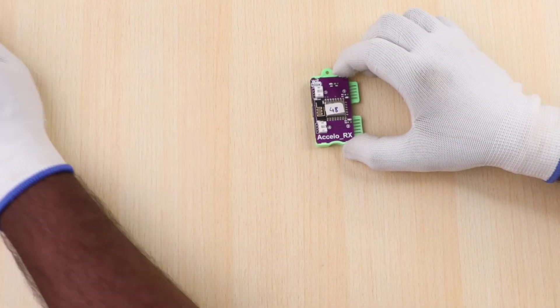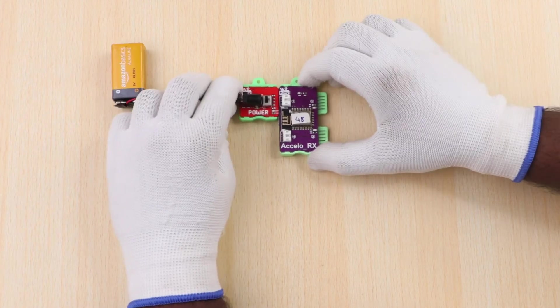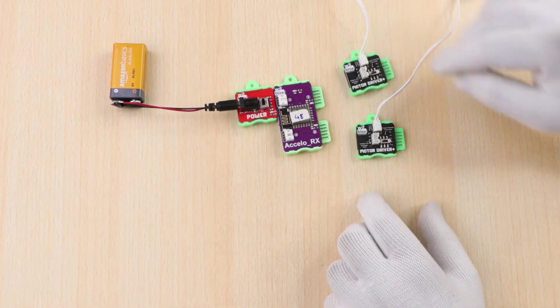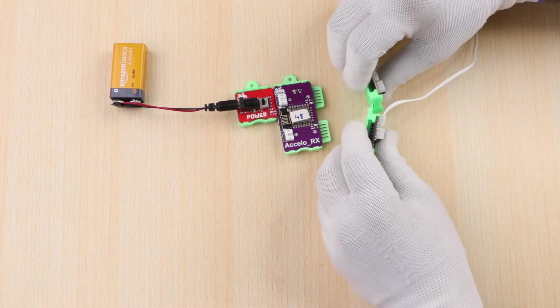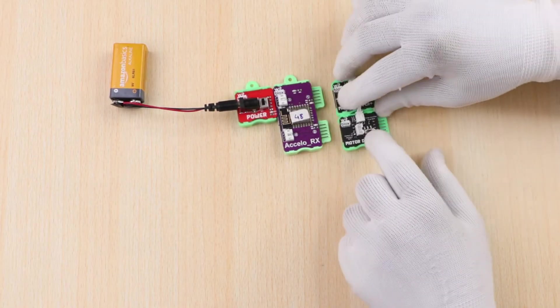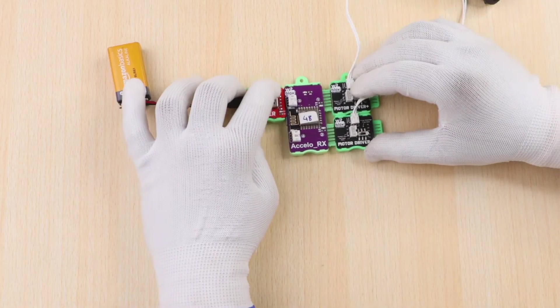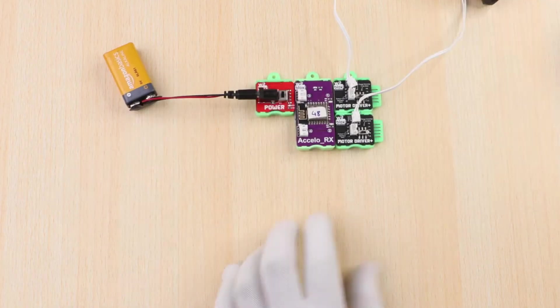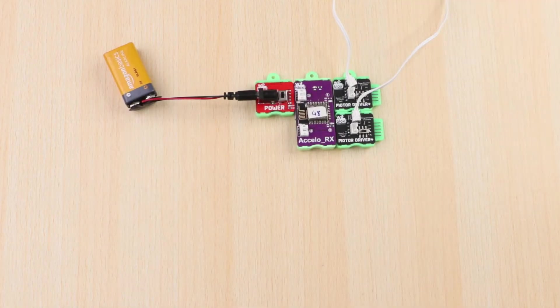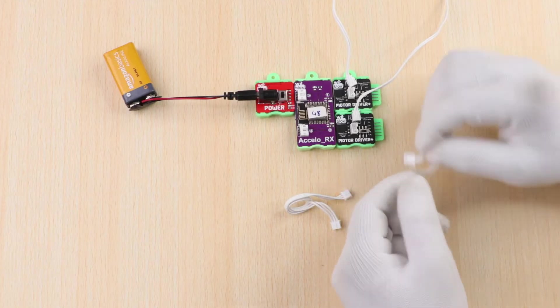Now take power and Axelero TX blocks and join them to both the motor drivers as shown. Also attach wire tap for backward motion.